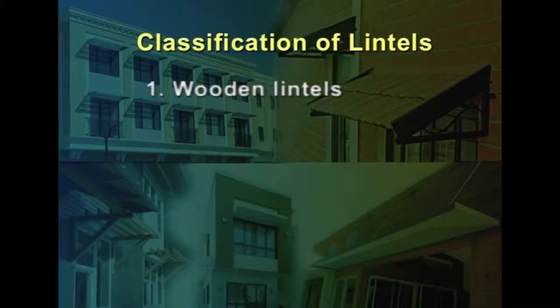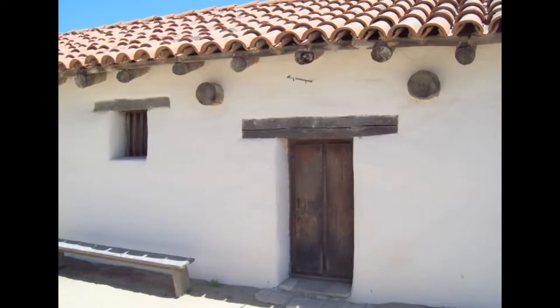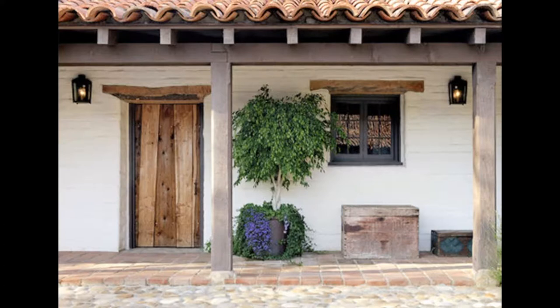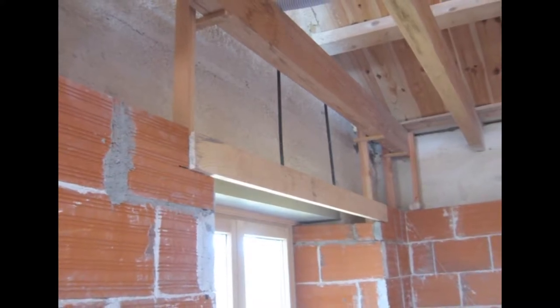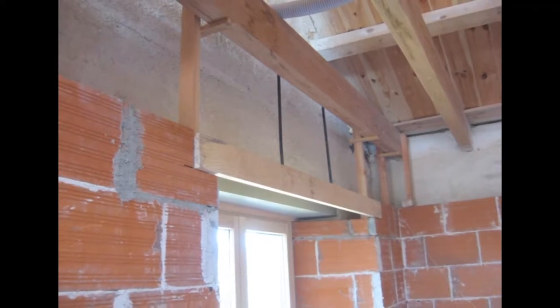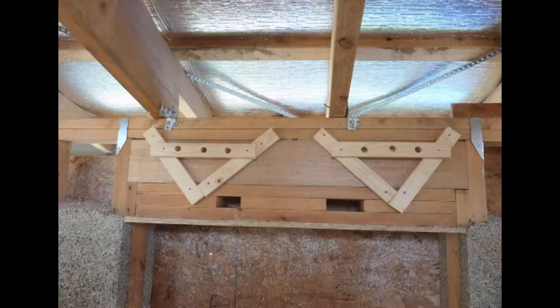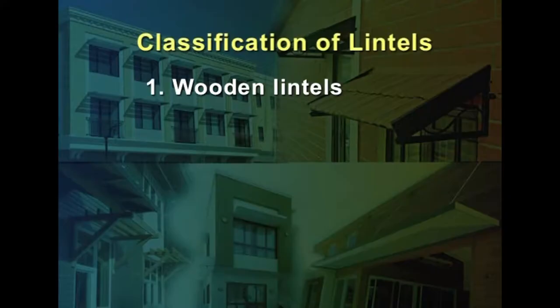Classification of lintels: lintels can be classified based on the material used in construction. Wooden lintels are the oldest type of lintels, used only at places where wood is cheaply available. Since wood is not resistant to fire and offers poor resistance to atmospheric agents and insects, it is not recommended for important work. Wood used for lintels should be well seasoned and coated with coal tar. A single piece of timber or built-up sections of two or three pieces bolted together may serve as a lintel.